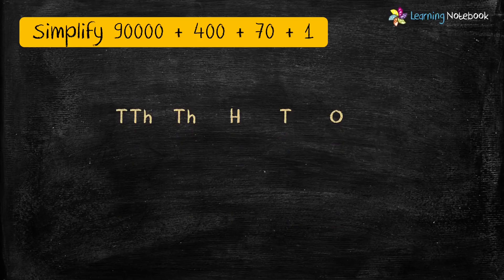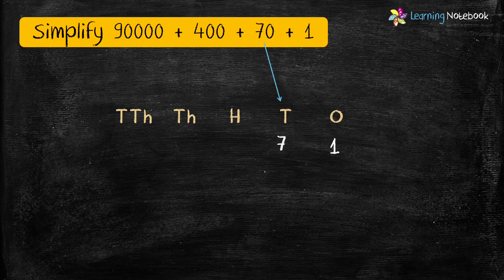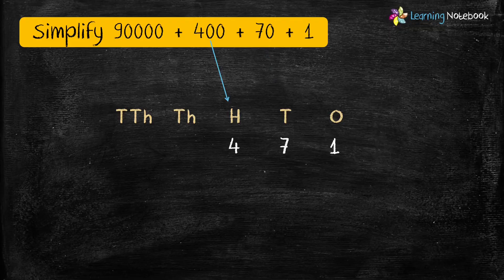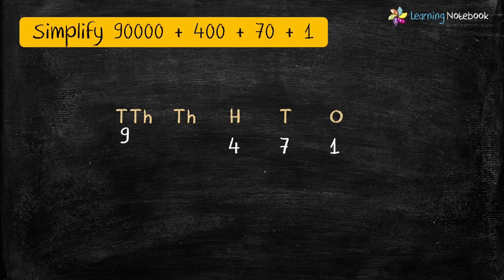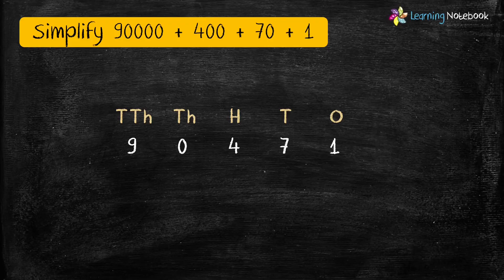The number 1 forms the digit at the 1's place. Next, 70 makes the digit at the 10's place. Then 400 forms the digit at the 100's place. Now the next number given is 90,000, which forms the digit at the 10,000's place. Did you notice that there is nothing mentioned about the 1,000's place in the expanded form? So it means the digit at the 1,000's place is 0. Therefore, the number formed is 90,471.